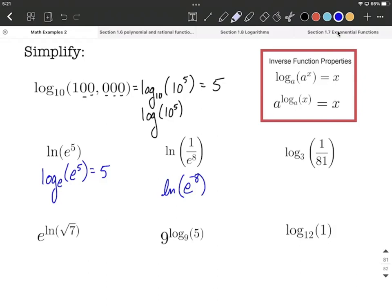So e to the negative eighth is equivalent to one over e to the positive eighth. Now that we've lined it up, we're going to get same bases, get nice canceling out as you compose them together. We're only going to be left with that negative eight as the exponent.